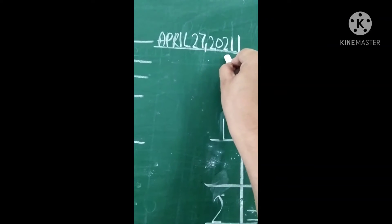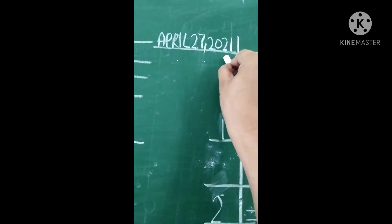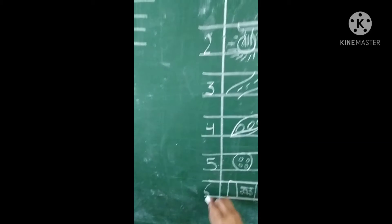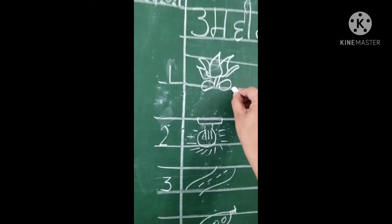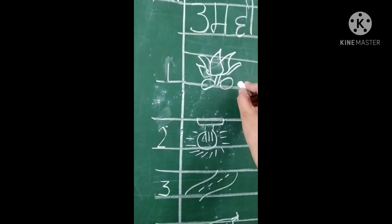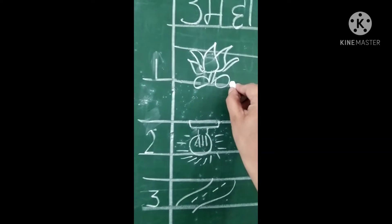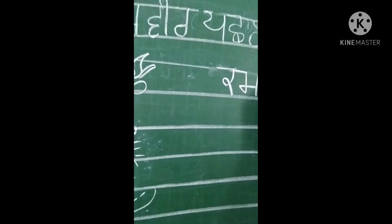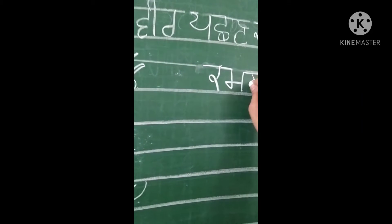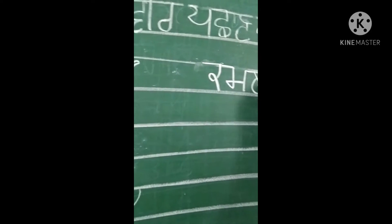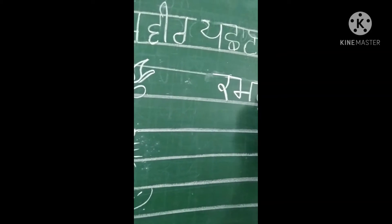First of all you have to write here today's date April 27, 2021. Now you have to write 126 number and then make picture.